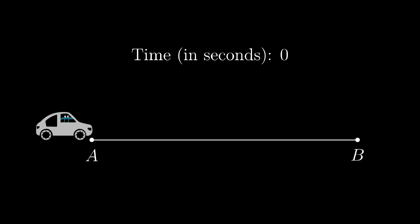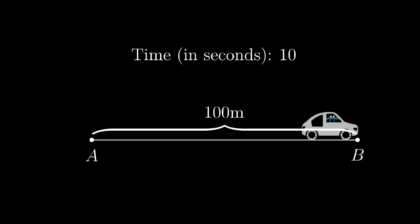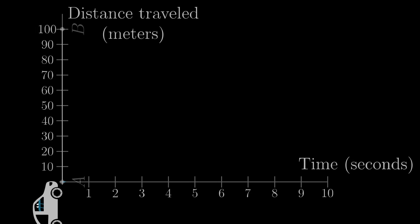As our central example, I want you to imagine a car that starts at some point A, speeds up, and then slows down to a stop at some point B, 100 meters away. And let's say it all happens over the course of 10 seconds. That's the setup to have in mind as we lay out what the derivative is. We could graph this motion, letting the vertical axis represent the distance traveled and the horizontal axis represent time.